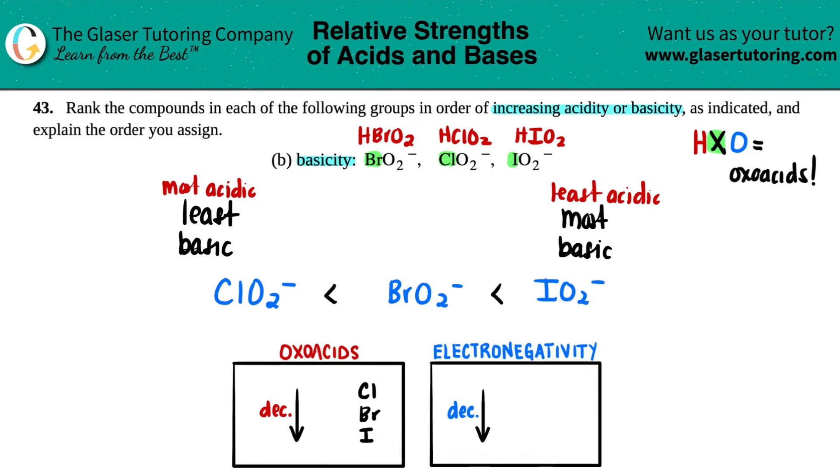If we need to explain it, we can talk about what we discussed in terms of acidity. For oxo acids, if you decrease your acidity, that means you're increasing your basicity. If we want to link this with electronegativity, you will also have a drop in your electronegativity.